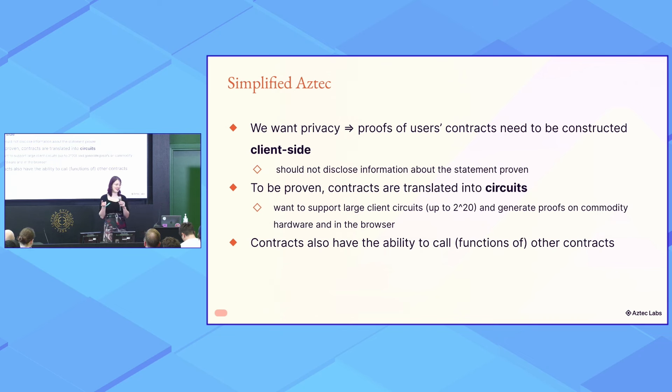So, something like a function F calling a function G, calling a function H, all belonging to different contracts. So, how do we prove this? These functions will be represented in separate circuits, so we need to prove the validity of these circuits individually, and we also need to establish the correctness of the function call stack and the fact that the recursive verifiers of previous proofs return true. And this is what we refer to as the kernel circuit.